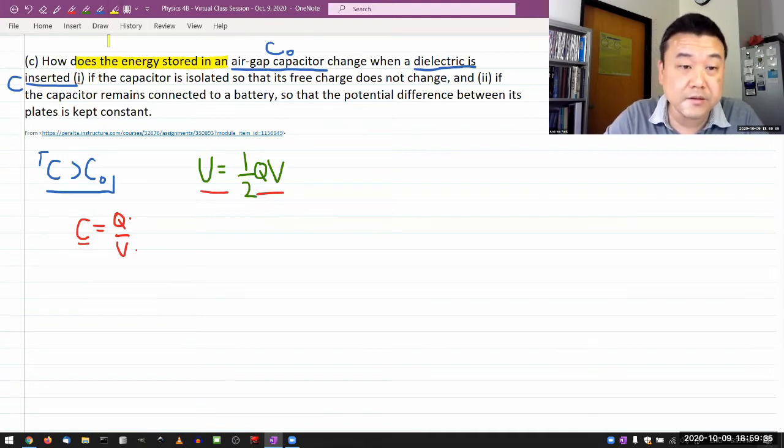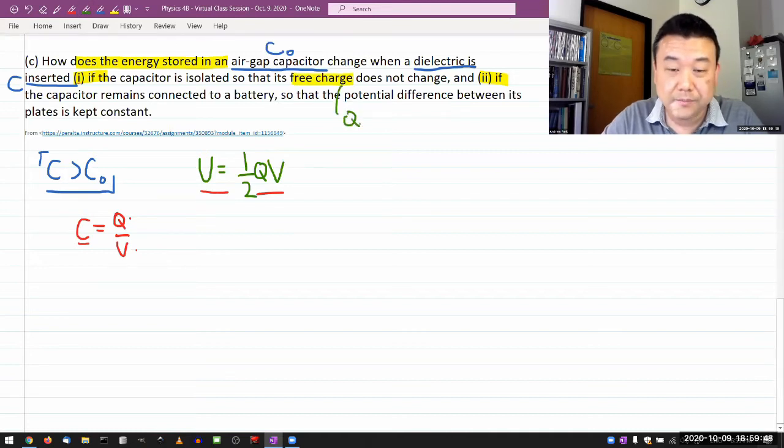In fact, these two scenarios are exactly when it's not quite convenient to use this expression, because one of them has the charge Q not changing. All right, that's great. But what if V changes? Unless I know the direction to which V is changing, it's not telling me how the potential energy will change.